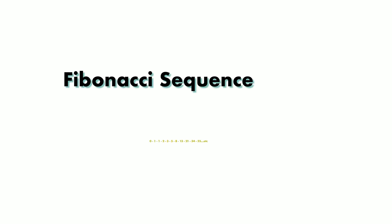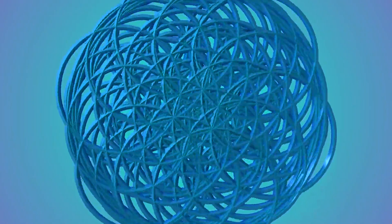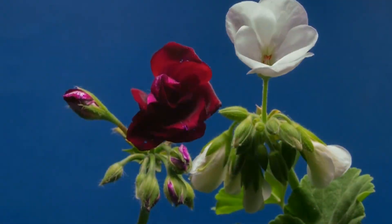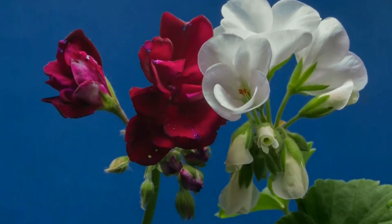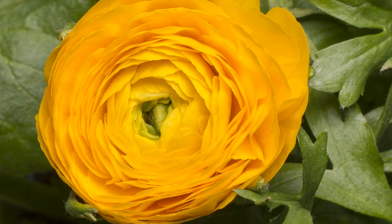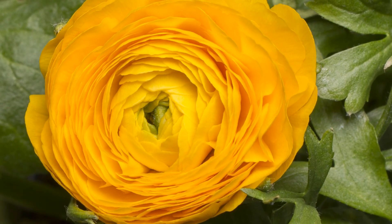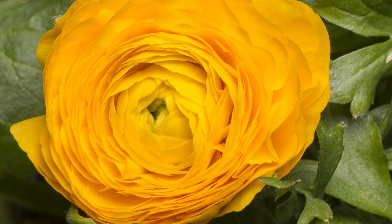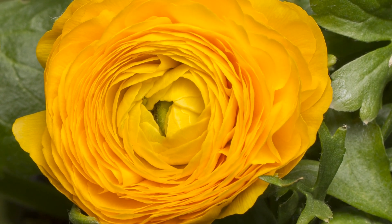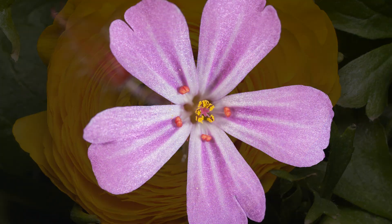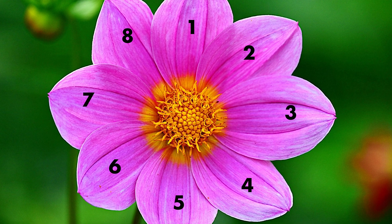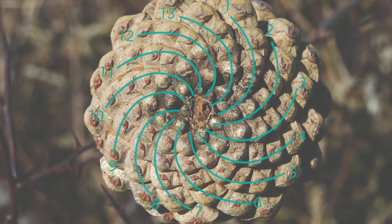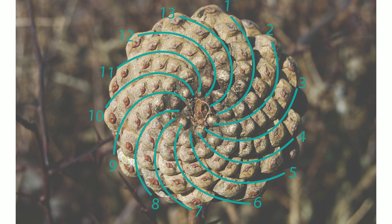Now, why is this Fibonacci sequence so important? What is special about it? Well, this sequence can be observed in nature all around. As you can see here on the screen, if you observe how flower petals grow, you can see that they grow following the Fibonacci sequence — for example, 3 petals, or 5 petals, or 8 petals, or 13, or 21, or 34. It seems that nature just works this way — it's like the code of nature itself.